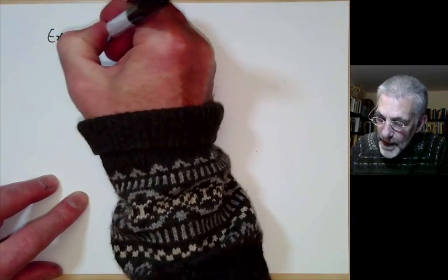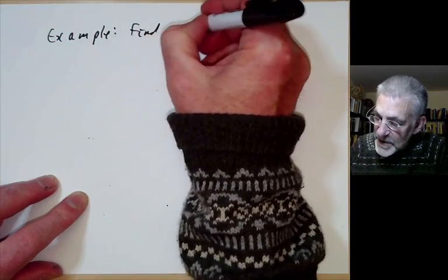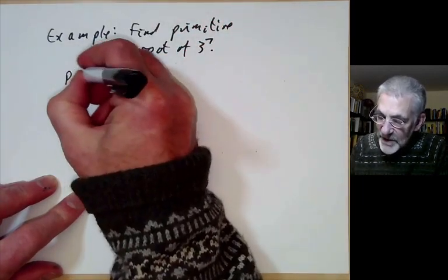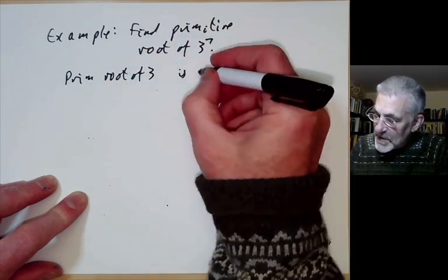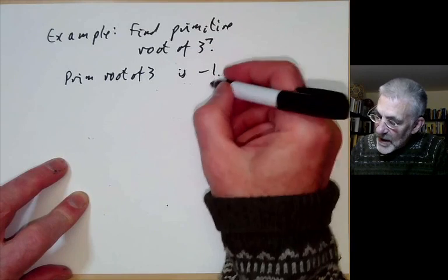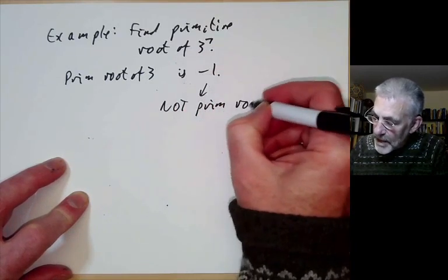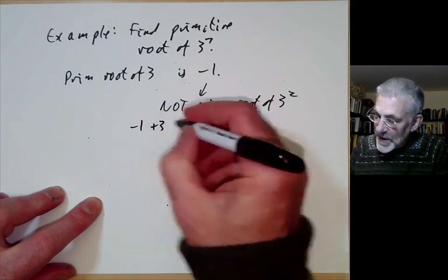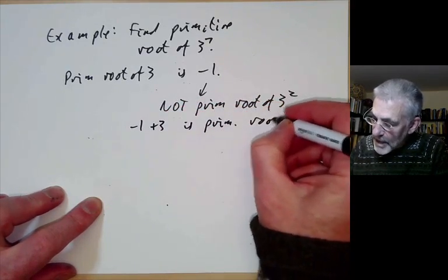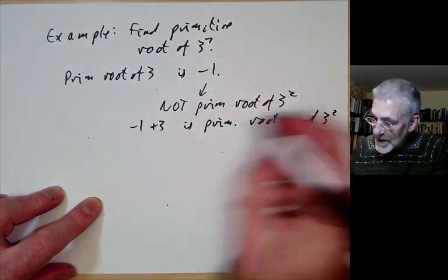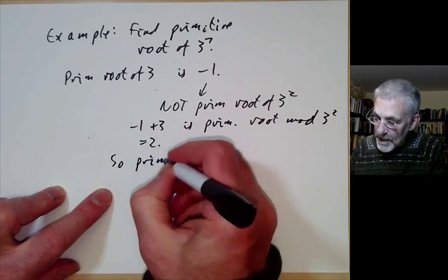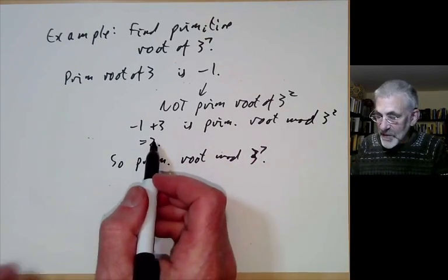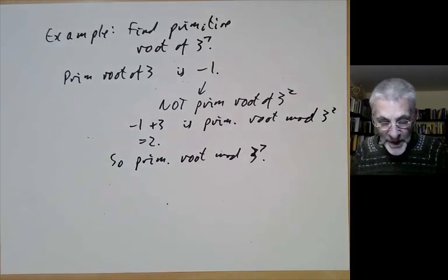For example, let's find a primitive root of 3 to the 7. We start with a primitive root of 3; the simplest is minus 1. But minus 1 is not a primitive root of 3 squared — it only has order 2. So we take minus 1 plus 3, which equals 2, and this is a primitive root mod 3 squared. Therefore 2 is automatically a primitive root modulo 3 to the 7, since once you've found a primitive root modulo 3 squared it's automatically a primitive root modulo any power of 3.